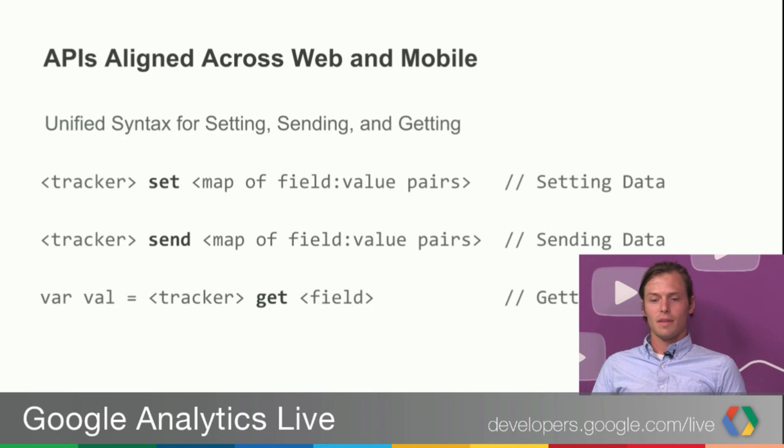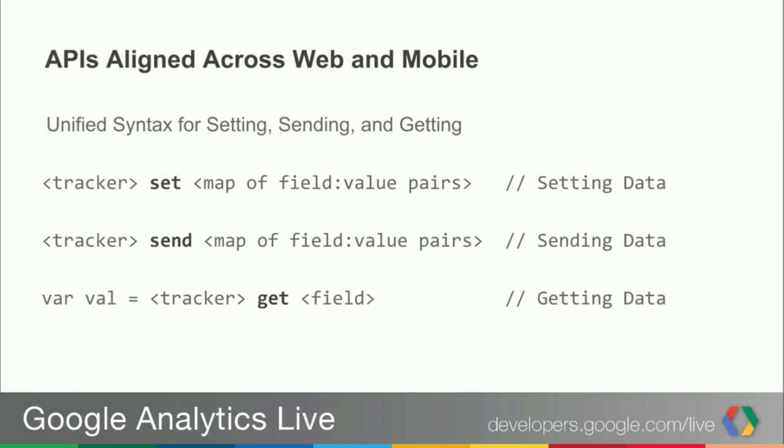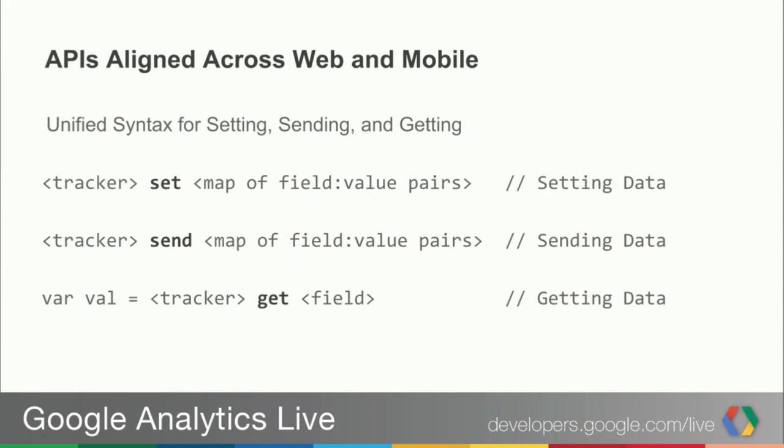The APIs are now aligned across web and mobile. The goal was to unify the way you do tracking calls across GA, whether you use Android, iOS, or websites — so you don't have to learn a new way of doing things with each platform. Following the Analytics JS route, there are basically three methods for your tracking needs: get, set, and send.